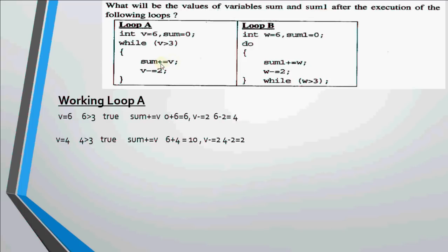It adds the value of v to the sum. This time you're not going to take sum as 0. You're going to take the sum, what value we got in the last iteration. So we got 6 in sum in the last iteration. This time v is 4. So 6 plus 4 becomes 10. So 10 is the new value of sum. Then v is decreased by 2 and we are left with 2 in v. It goes here again to check the condition. 2 greater than 3 is false. So the loop stops. Thus the final value of sum in loop a is 10.